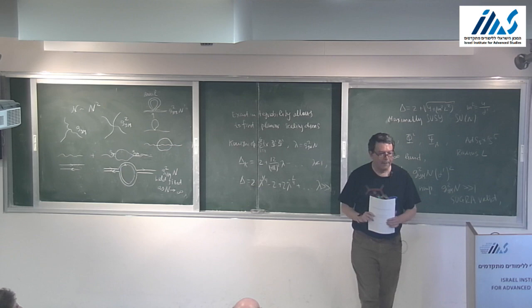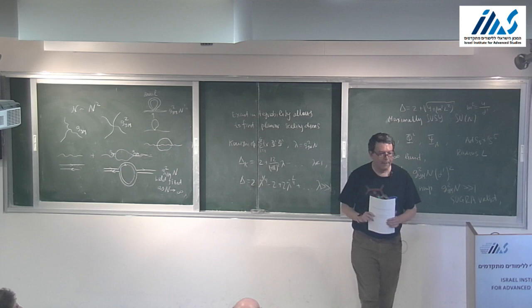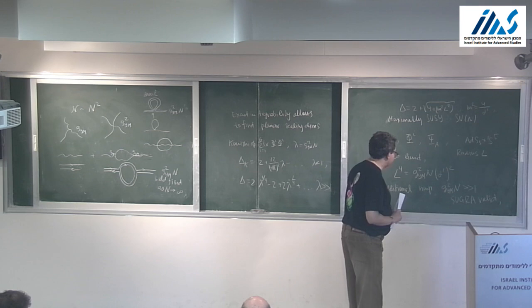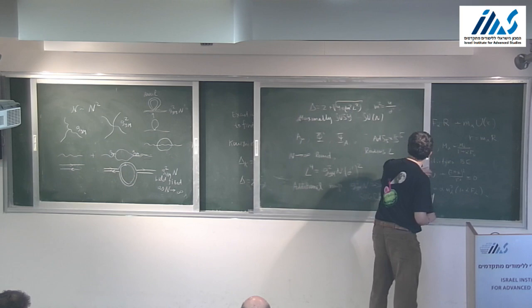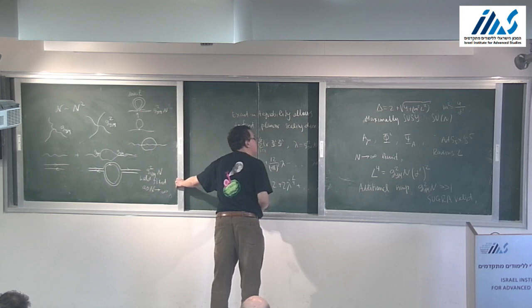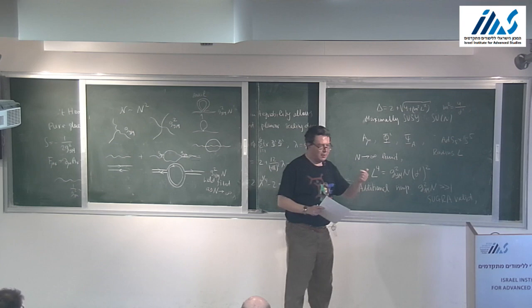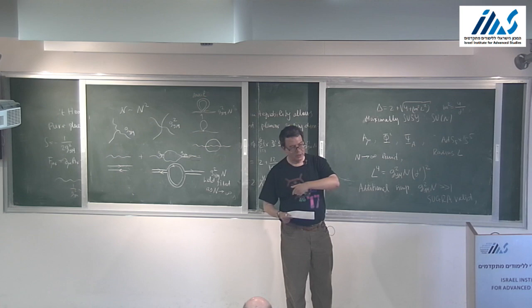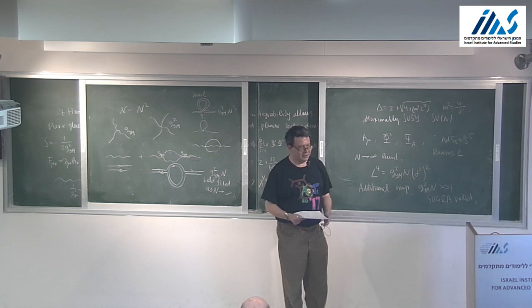An audience member asks why a previous non-planar diagram corresponds to the torus. There is a handle you can see: the line that goes above really goes through the handle, because on a sphere it would not be able to pass over the other line.